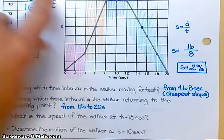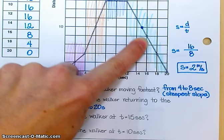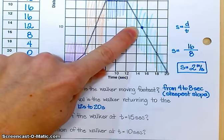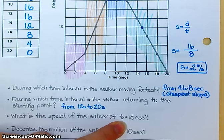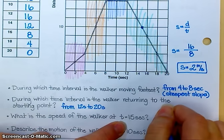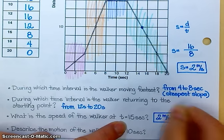2 meters per second. What is the speed of the walker the entire time right through here? 2 meters per second. This whole time, 2 meters per second. So, what is the speed of the walker at t equals 15 seconds? 2 meters per second. Because it's in that section of the graph that we just calculated.